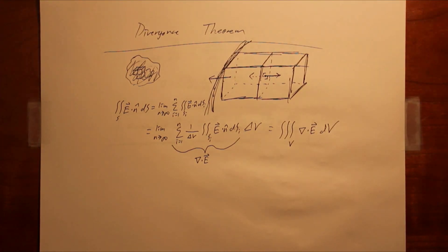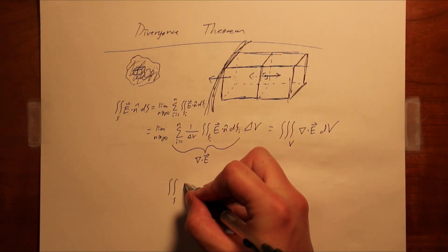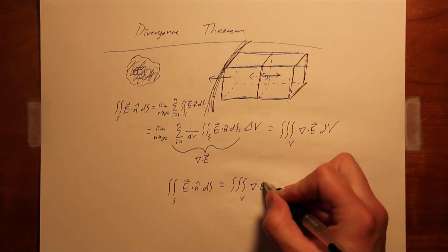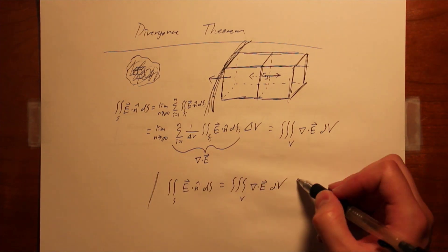This result is the divergence theorem, which states that the surface integral of a vector field over a closed surface is equivalent to the triple integral of the divergence of the field over the enclosed volume.